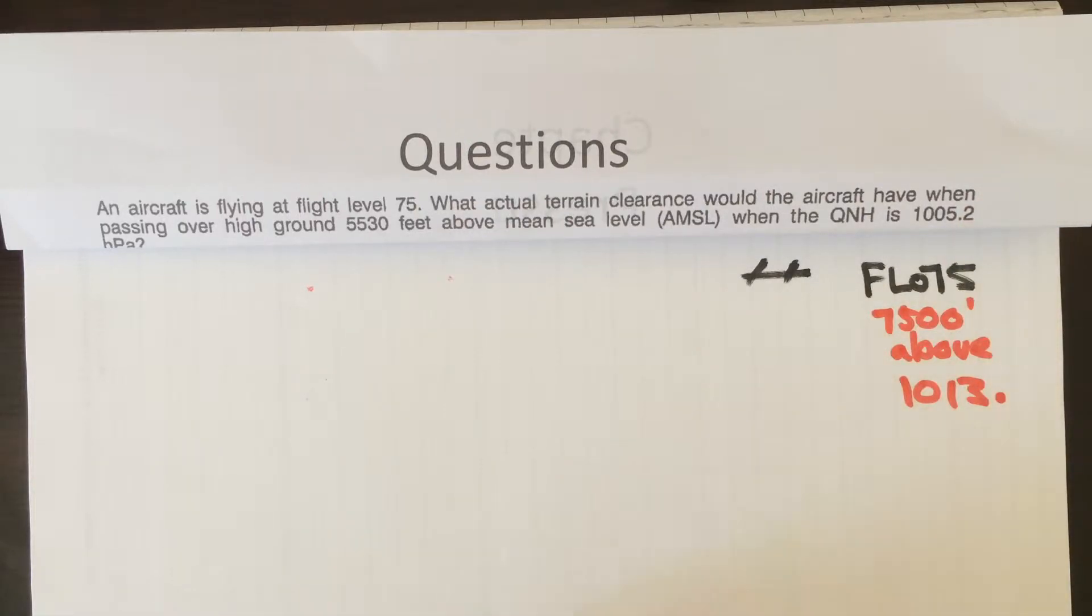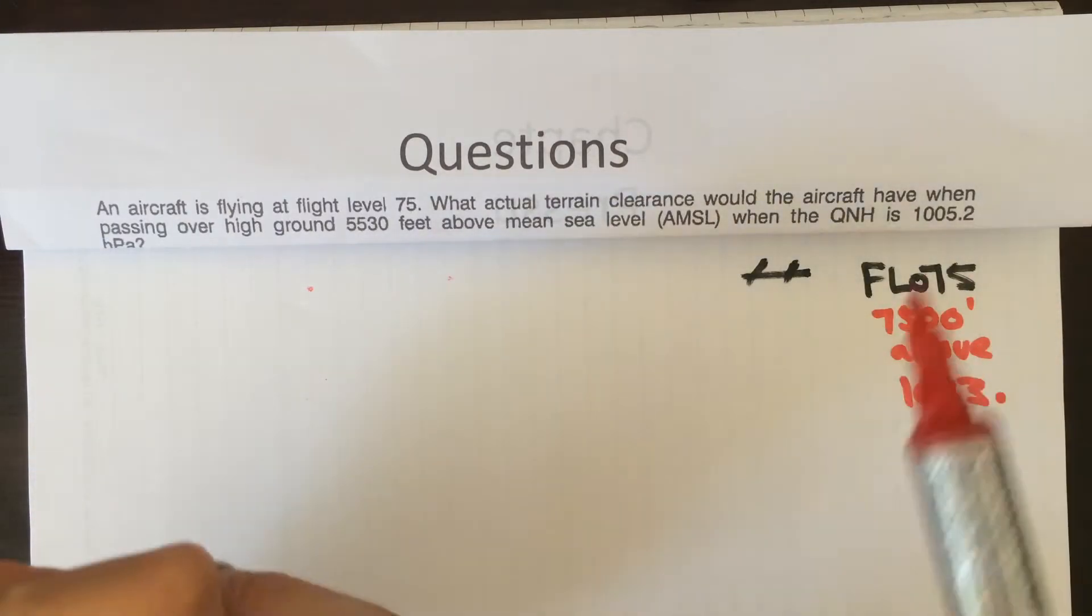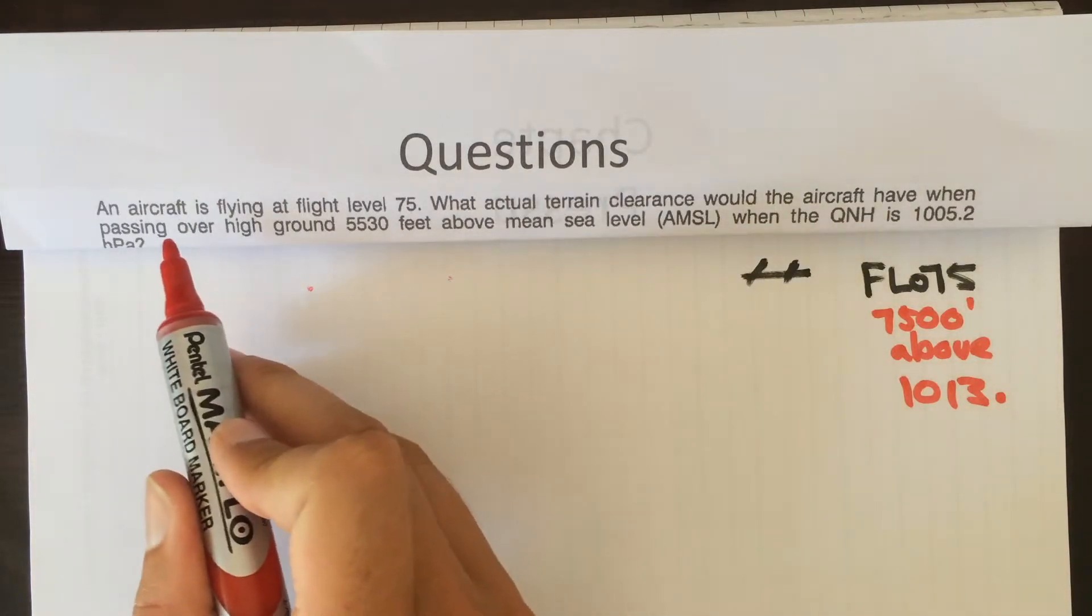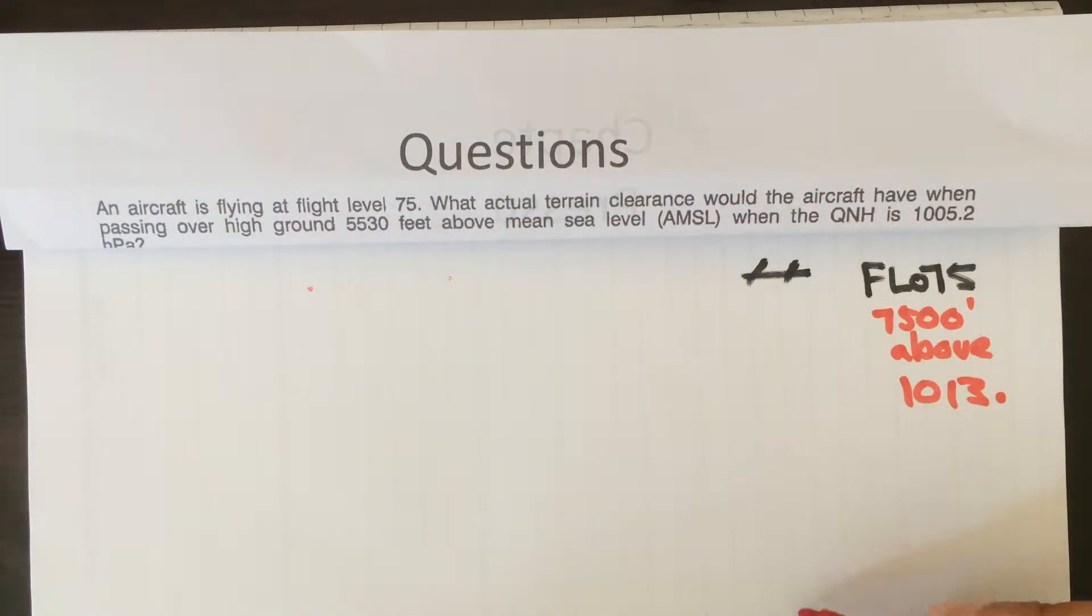We'll ignore that two just to make it a little less complicated, but you don't really need to do that. So we know high ground - when they're talking about terrain, terrain is land. So what is our land clearance, how many feet above the land will we be? We've got high ground of five thousand five hundred thirty feet, so I'm just gonna draw a mountain over here and write this in: 5530. And we know QNH is 1005.